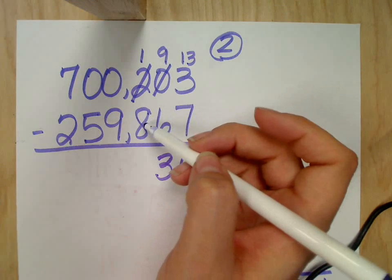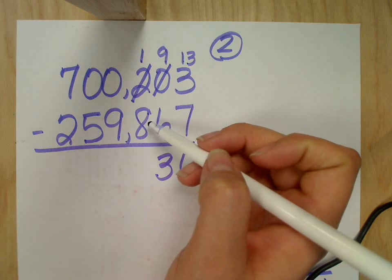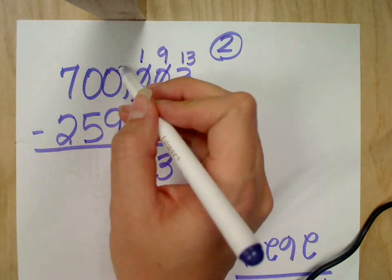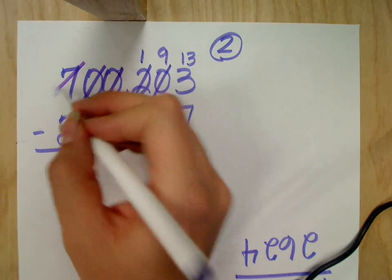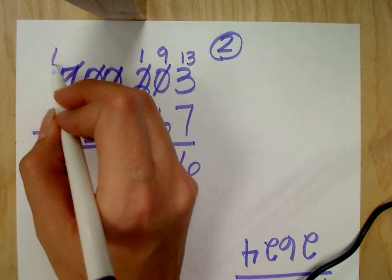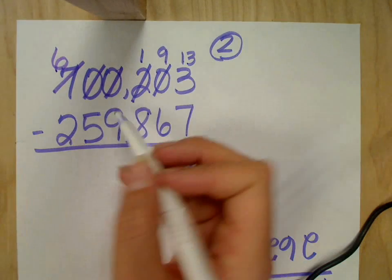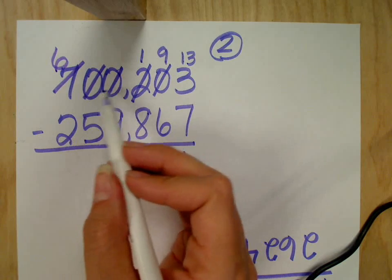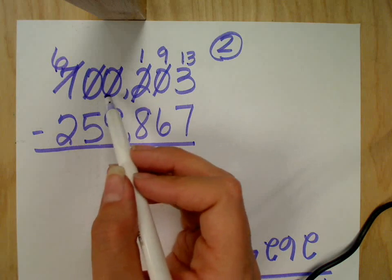Now here I have one take away eight, which I can't do. So again, I need to borrow. The zeros don't give me anything, so I borrow from the seven. The seven becomes a six. And then these, remember, do not get their full value. So you can't make them tens. They become nines.